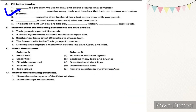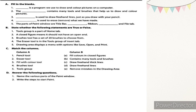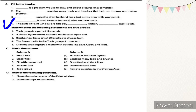Number three: dash is used to draw freehand lines just as you draw with your pencil — the answer is pencil tool. Number four: dash is used to erase what you have made — eraser tool. Number five: the parts of the paint window are title bar, dash, ribbon, dash, and file tab. The correct answers are quick access toolbar and drawing area.